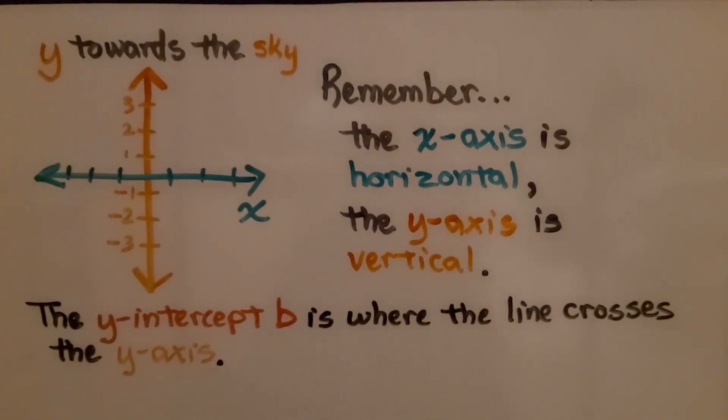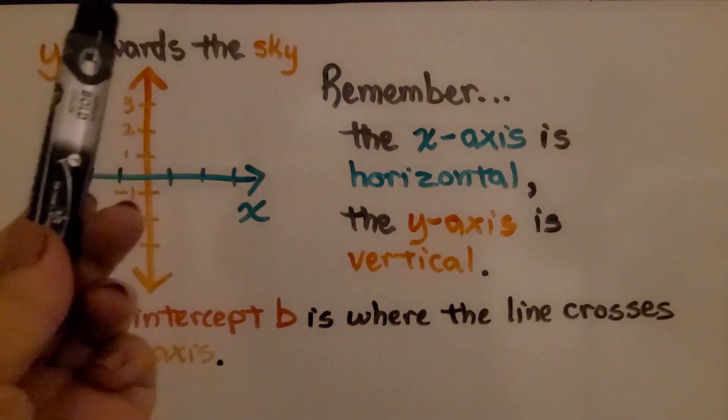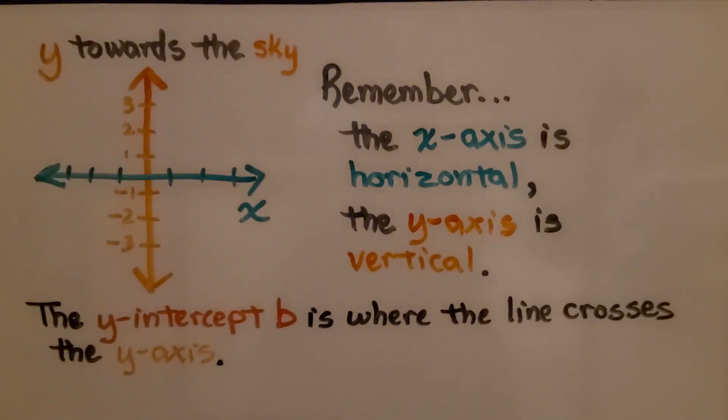Remember, the x-axis is horizontal, the y-axis is vertical. And I always say you can remember that as y towards the sky. The y-intercept b is where the line crosses the y-axis. If it crosses above the x-axis, it will be a positive y-intercept b. If it crosses below the x-axis, it will be a negative y-intercept b.